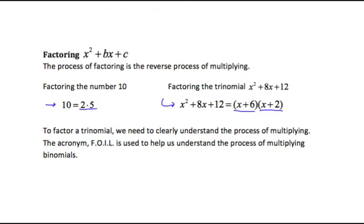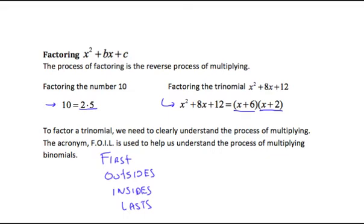The acronym FOIL is used to help us understand the process of multiplying. FOIL stands for Firsts, Outsides, Insides, and Lasts. Once we use these words to describe the multiplication process, it's going to allow us to understand every piece of that multiplication process so that we can reverse it and factor trinomials.